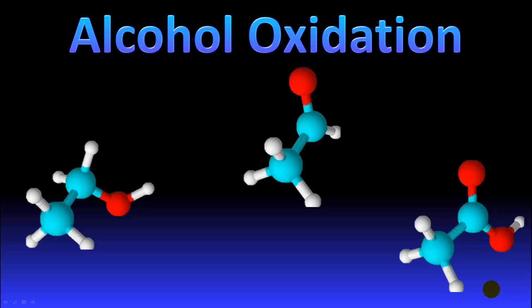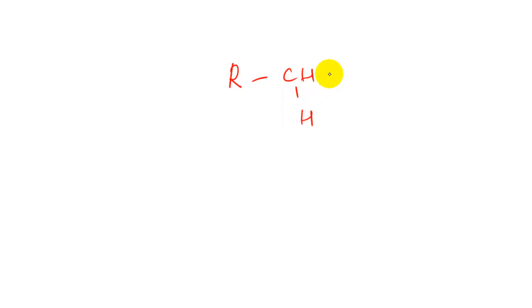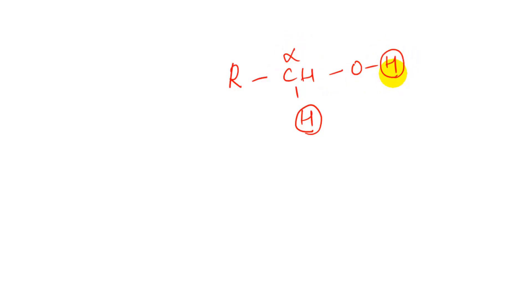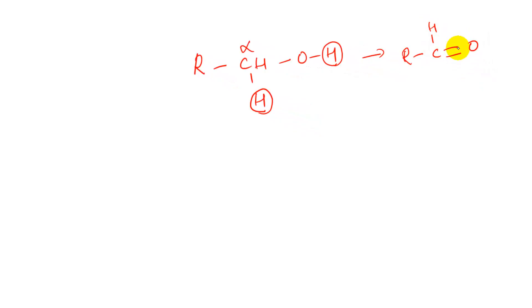Welcome to this video on alcohol oxidation. We're going to talk about the various methods of oxidizing primary and secondary alcohols to convert them into aldehydes and ketones. If you have a primary alcohol, it is going to lose one of the hydrogens from the alpha carbon — the carbon that has the OH — and one hydrogen from the OH group, and you will get an aldehyde.